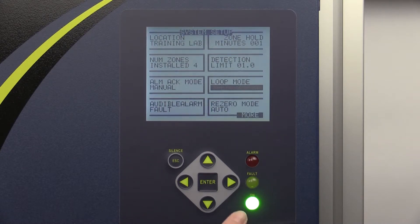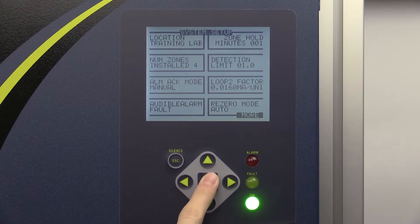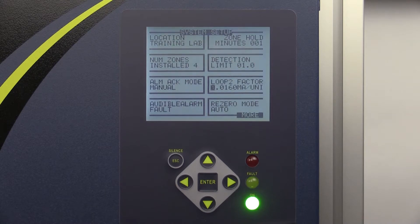Press enter twice on the loop mode tab to access the loop 2 factor tab. The loop 2 factor sets the PPM scale factor for current loop number 2. If you want to calculate the current output, multiply the scale factor by the current PPM reading and add 4.